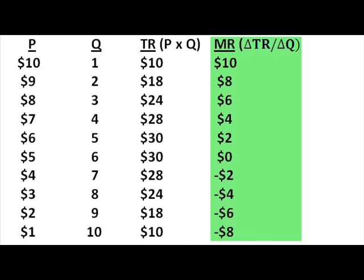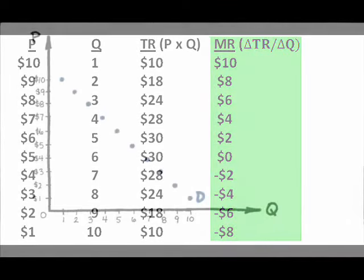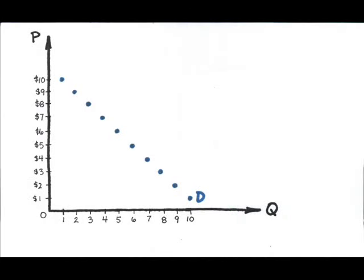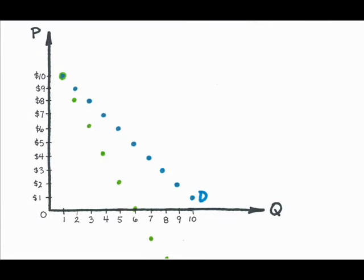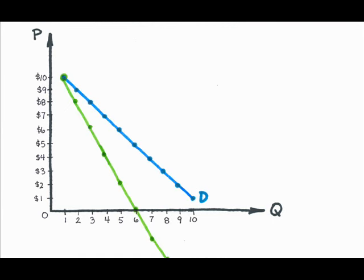Notice that, unlike perfect competition, the marginal revenue figures are less than the prices. If I plot out the numbers for demand and marginal revenue, you can see the contrast. I use the price and quantity figures to plot demand, and the marginal revenue and quantity figures to plot the marginal revenue curve. So I know that, generally, demand and marginal revenue look like this.